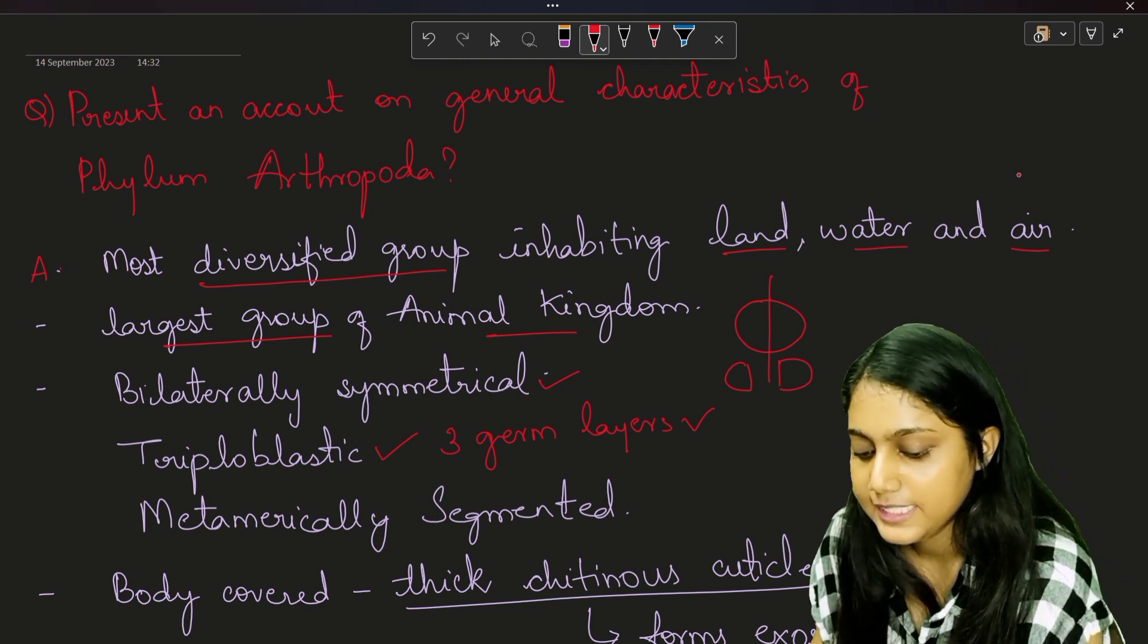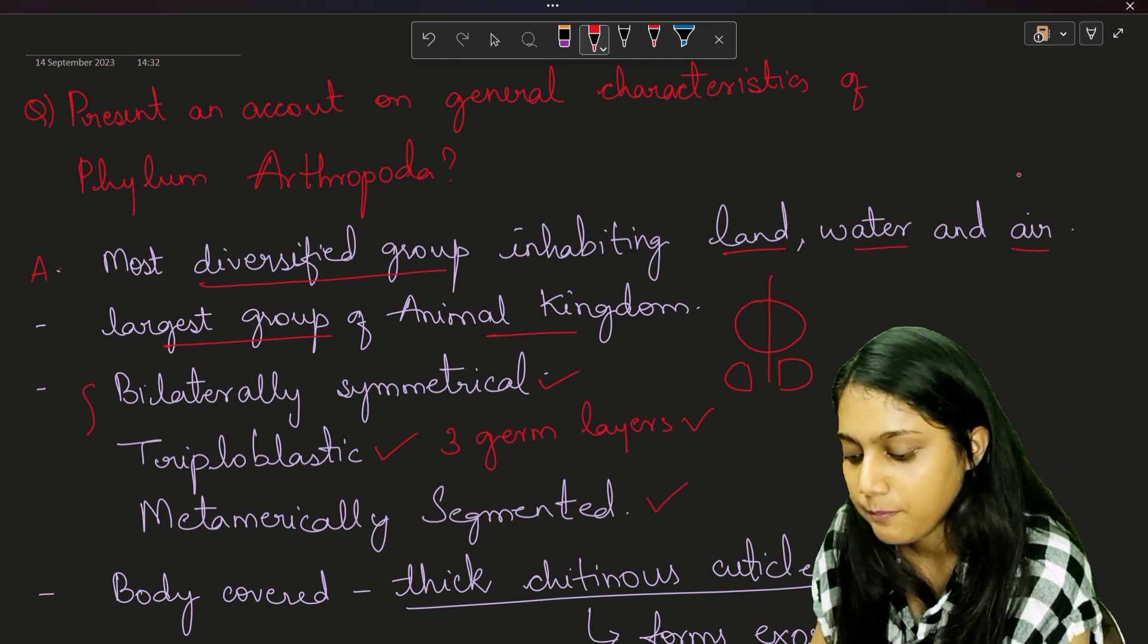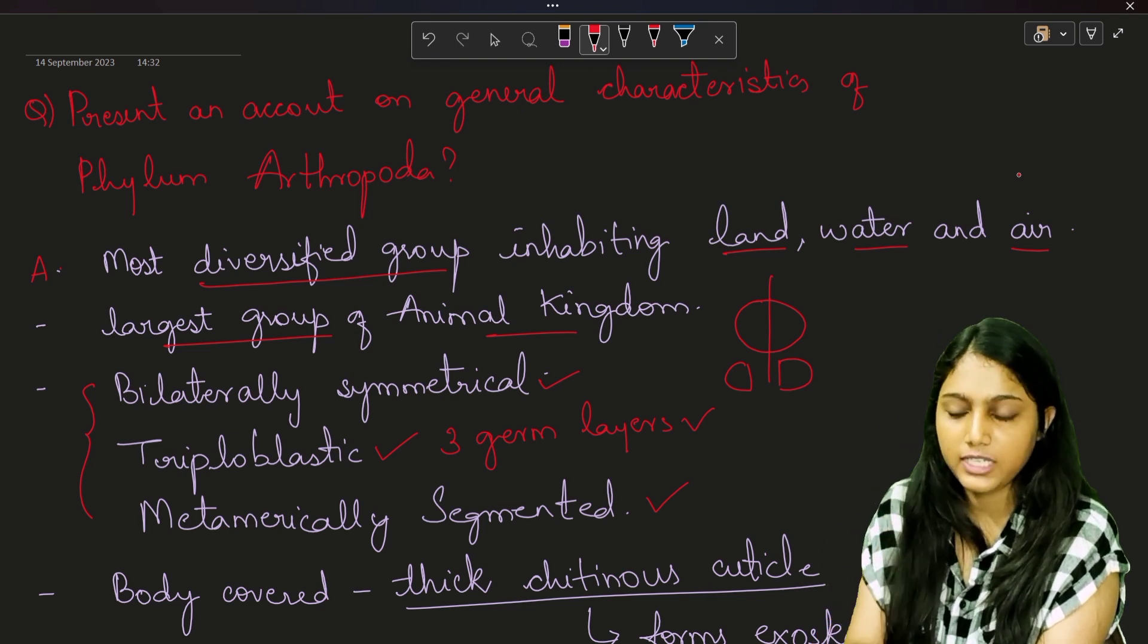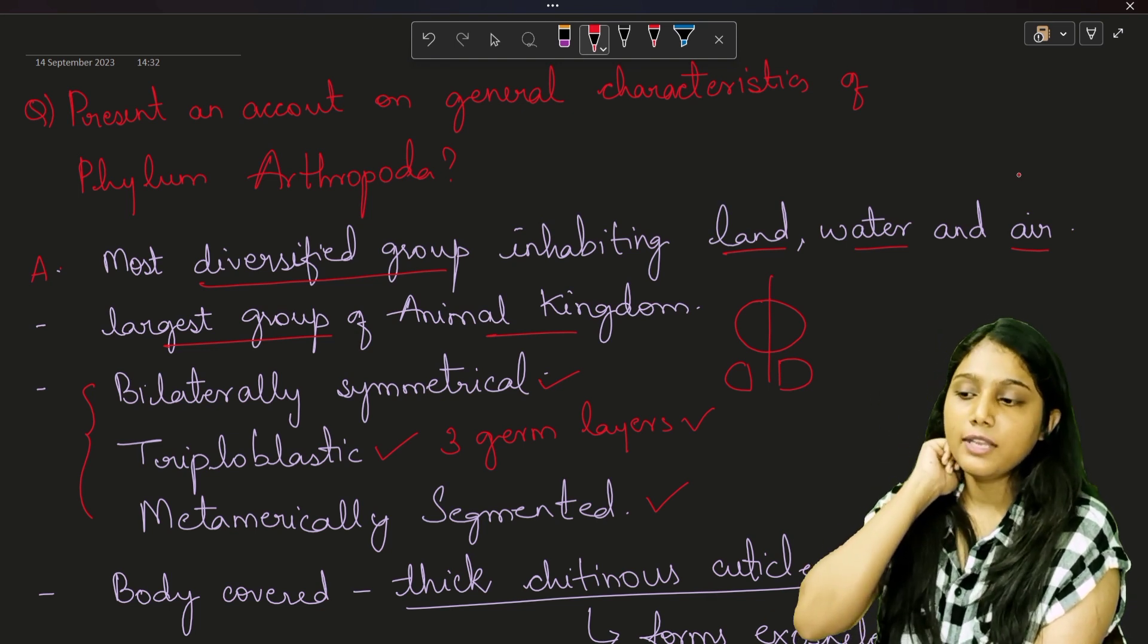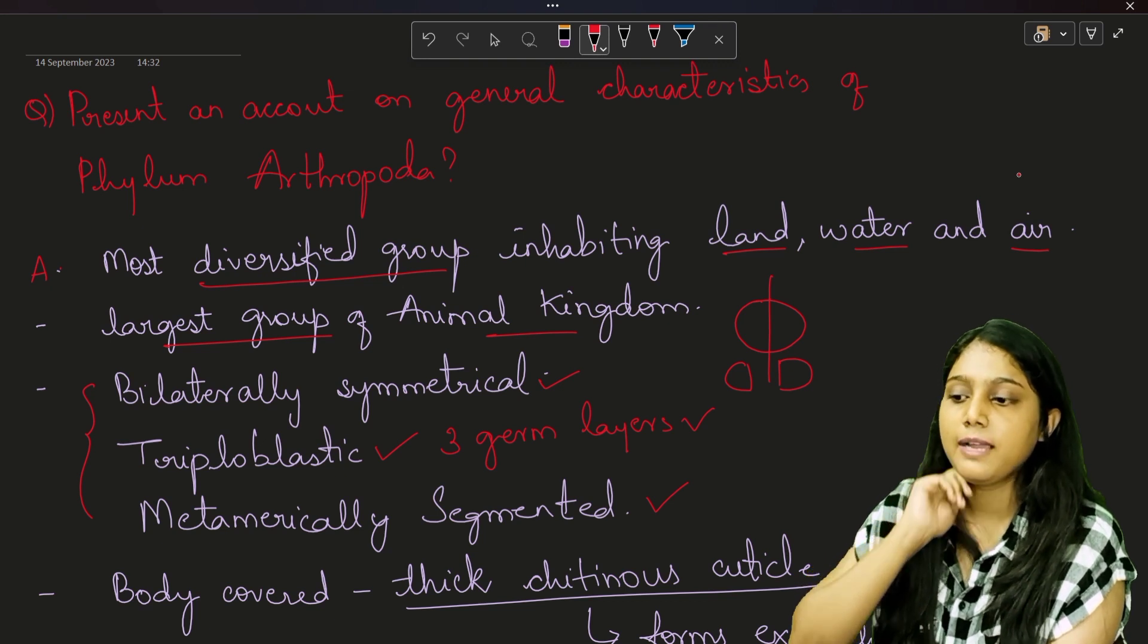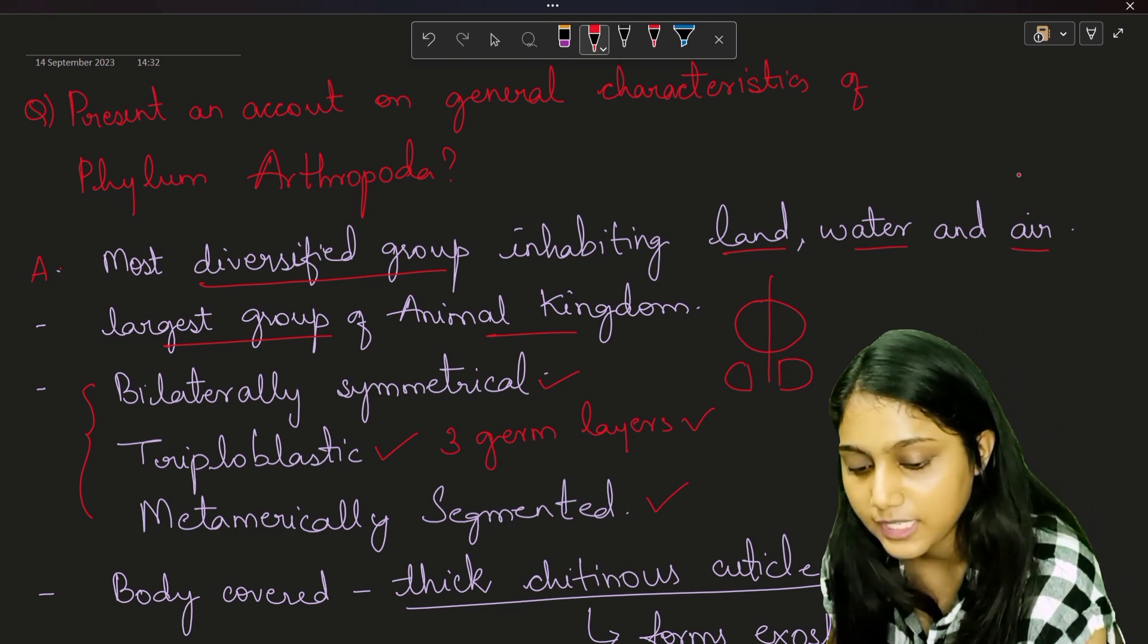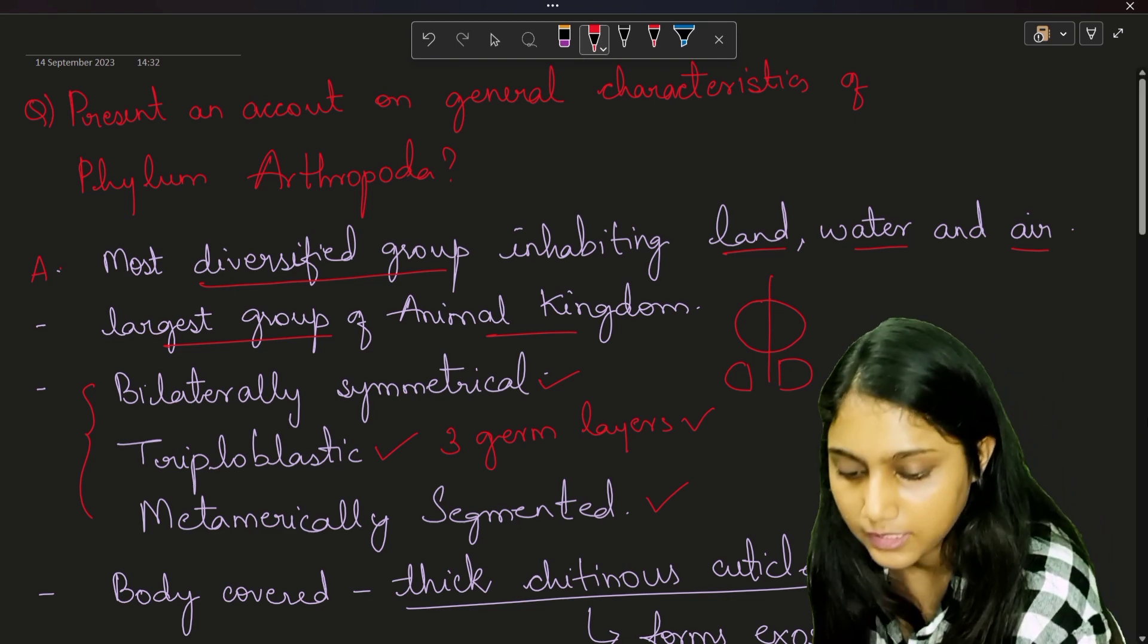And these are metamerically segmented. I have written this in three different points, you can make a single point out of these three lines. Like the organisms of Phylum Arthropoda are bilaterally symmetrical, triploblastic and metamerically segmented.